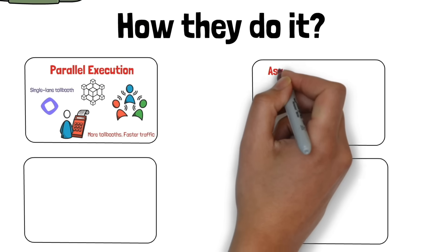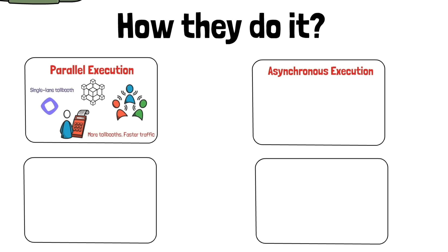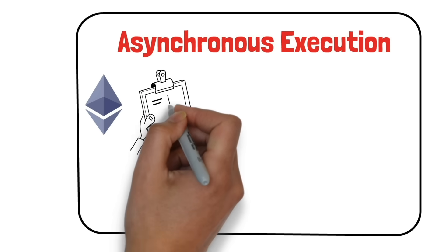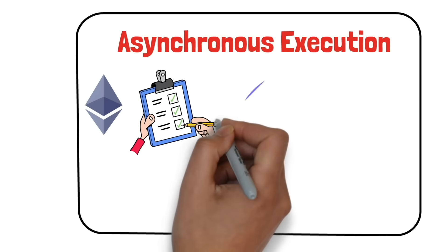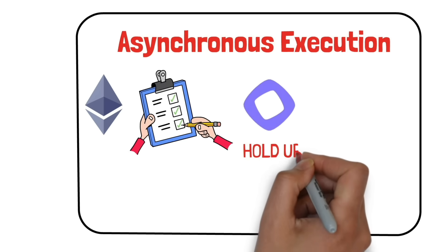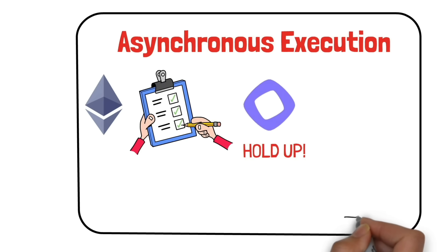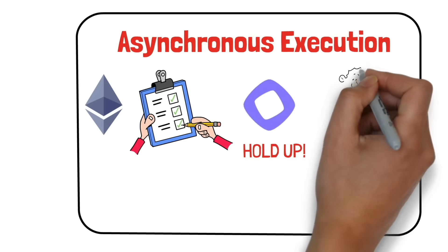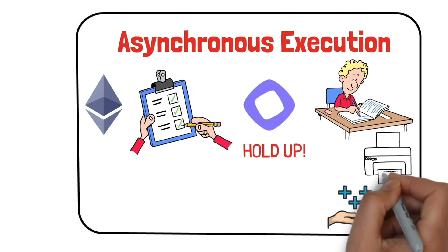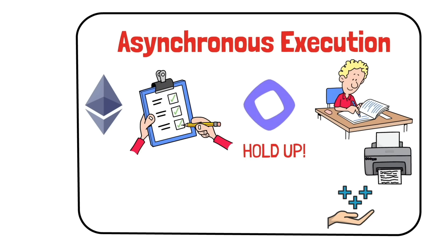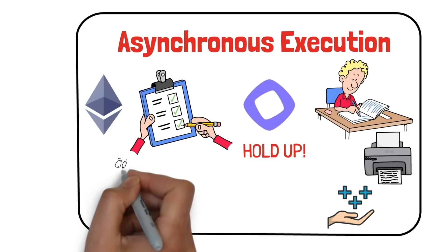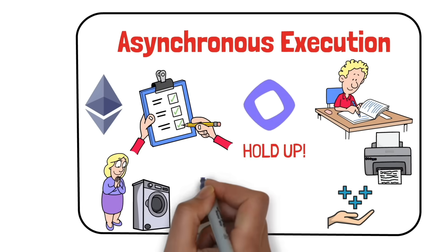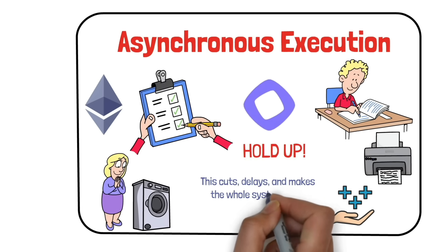Second, asynchronous execution. Normally, Ethereum processes steps in a strict order, like a checklist — one box at a time. But that slows things down. Monad says: some of these steps don't need to wait. Let's prepare them in advance and finish them when ready. It's like doing your homework while the printer is printing your report — you get more done in the same amount of time. It's like running your washer and dryer at the same time. Simply more efficient. This cuts delays and makes the whole system more optimized.